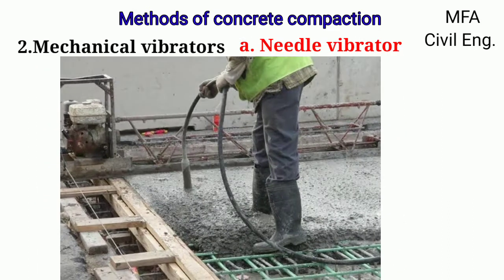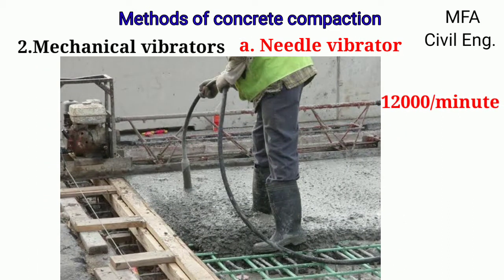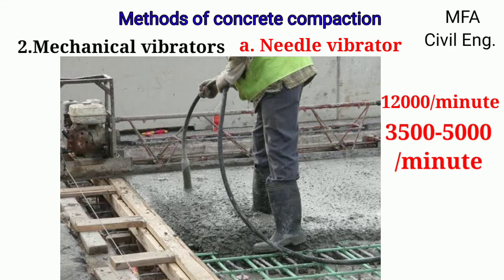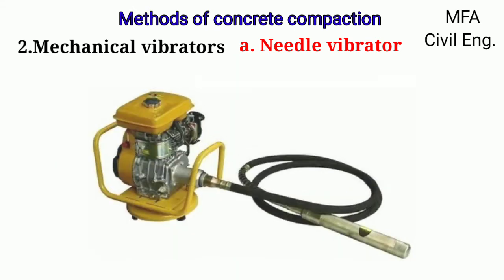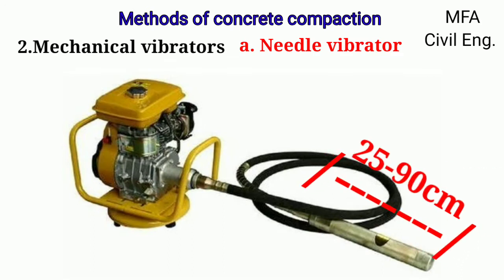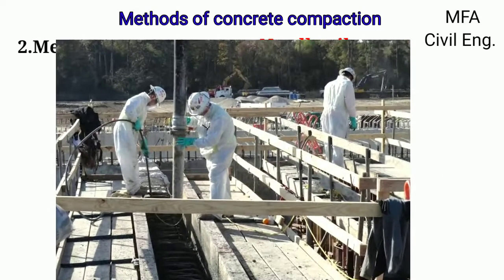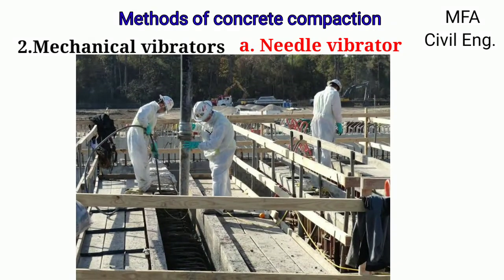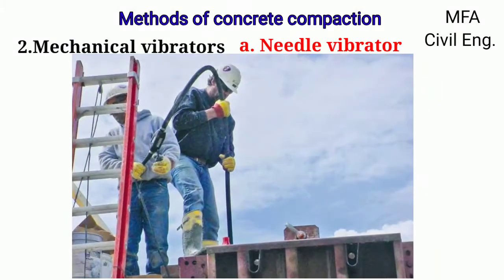The frequency of vibration varies up to 12,000 per minute, but generally a frequency of 3,500 to 5,000 per minute is used. The needle diameter varies from 20 mm to 75 mm and its length varies from 25 cm to 90 cm. Bigger needles are used in mass concrete. The needle can be replaced by a blade to facilitate vibrating in congested reinforcement.